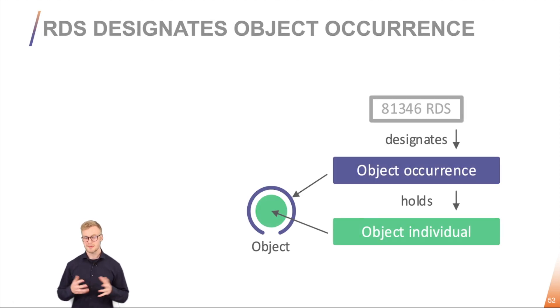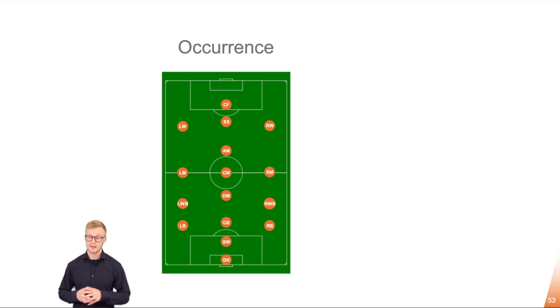So for example here we have a playing field with a lot of players on it. These players have different kinds of roles. So we have the goalkeeper, the center mid, the center back and so on.